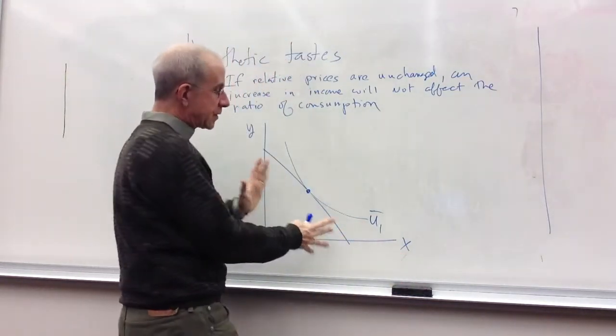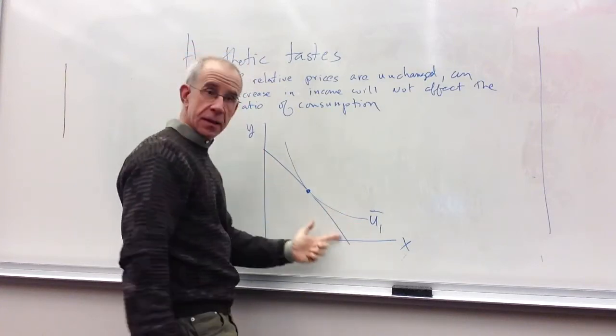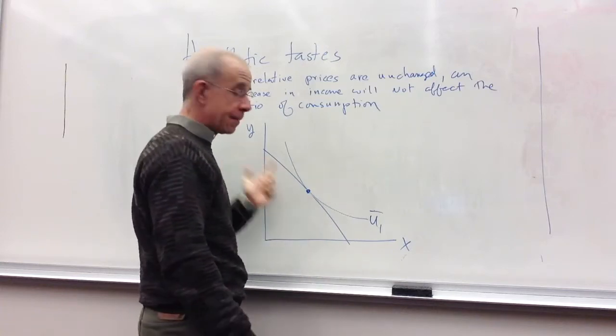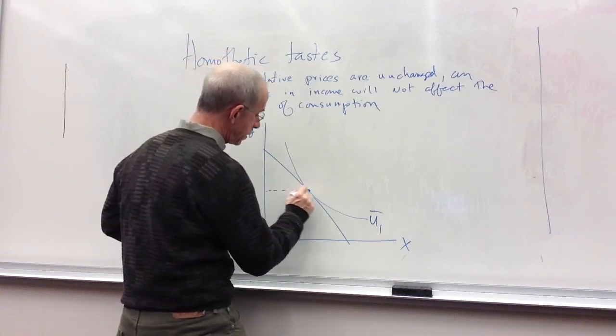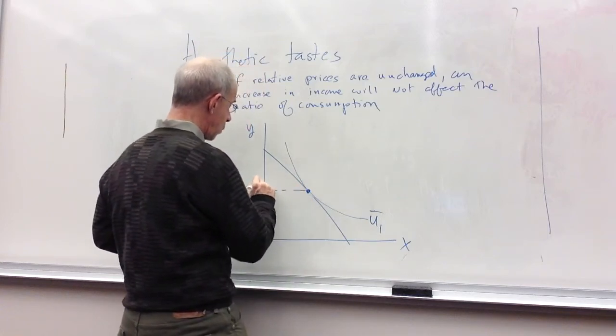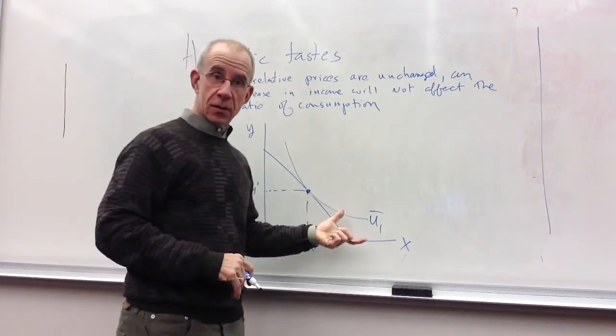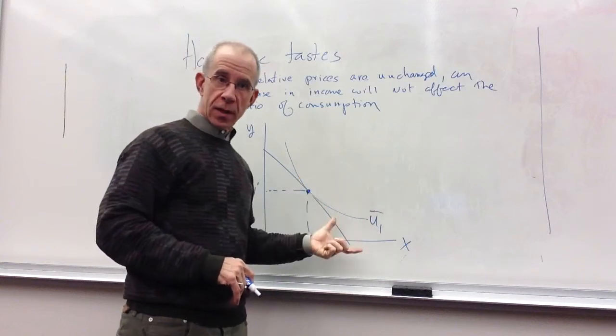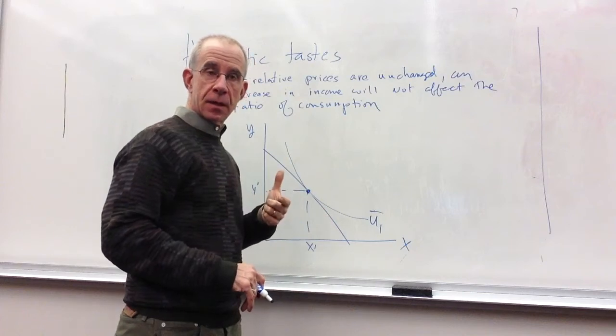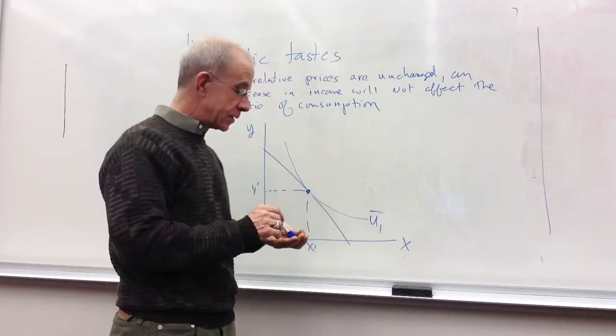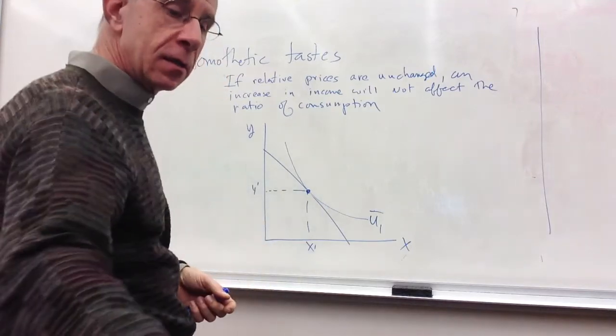So if we have a simple indifference curve where this line is the budget constraint and the slope of that budget constraint is the relative prices, we have a combination of Y and X associated with that utility, with income, with relative prices. So again, the slope of that blue line is the relative prices, and we have an income associated with that.